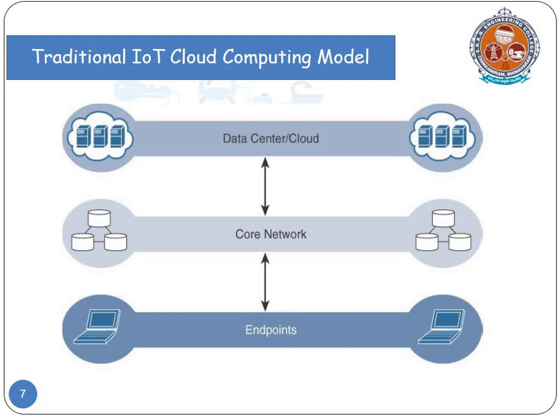Coming to the Cloud Computational Model, this is the traditional IoT Cloud Computational Model, in which the endpoint sends data through the core network, and that data is transferred to data centers or clouds. This is the traditional Cloud Computational Network in which, for the past 10 years, the data collected from the endpoint is transferred through core network connections to data centers or clouds.